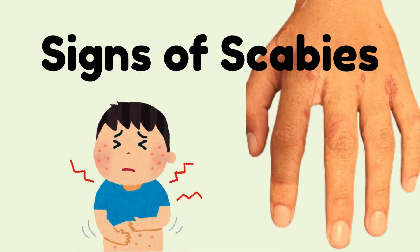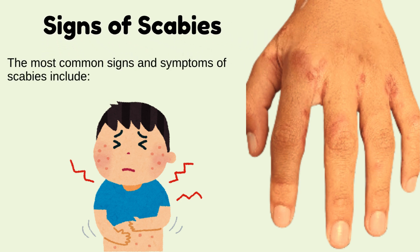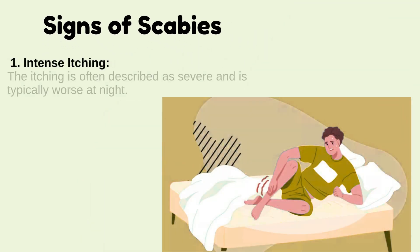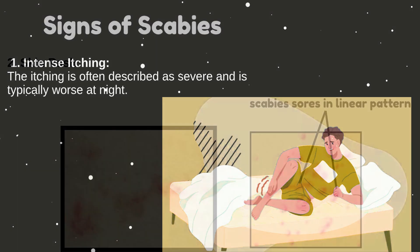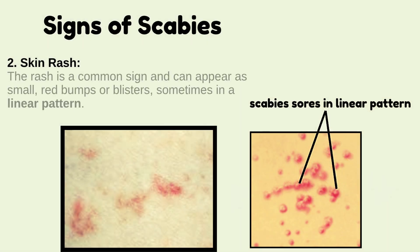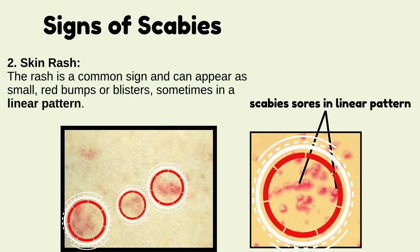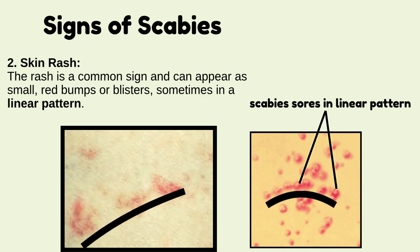What are the signs of scabies? The most common signs and symptoms of scabies include intense itching. The itching is often described as severe, and it is typically worse at night. Skin rash — the rash is a common sign, and it can appear as small red bumps or blisters, sometimes found in a linear pattern.